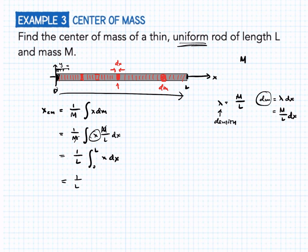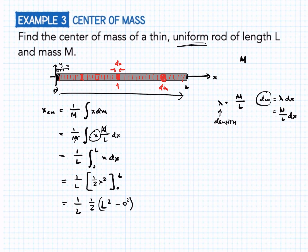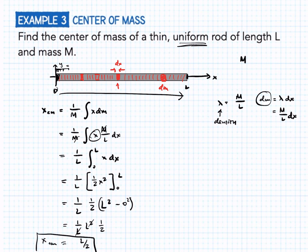Evaluating the integral: X_CM = (1/L) × [½ x²] from 0 to L = (1/L) × (½ L²) = L/2. So the center of mass is at the halfway point - which we should have guessed, since this is a uniform rod. A uniform rod will always have its center of mass at the center, and now we have derived that result mathematically.